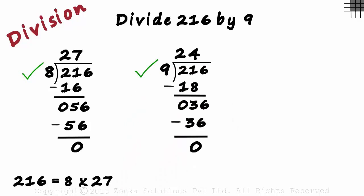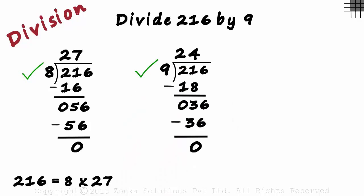So 9 is a factor of 216. And since 216 can also be written as 9 multiplied by 24, 24 is also a factor of 216.